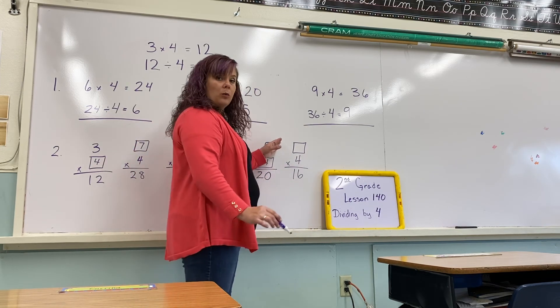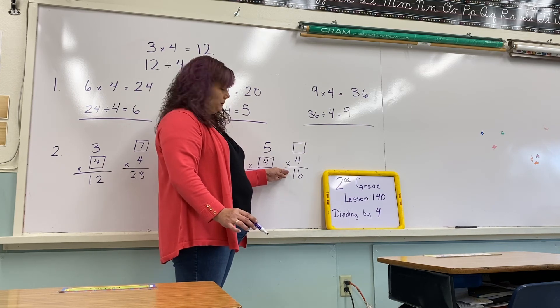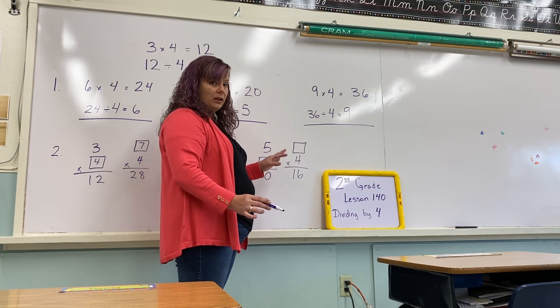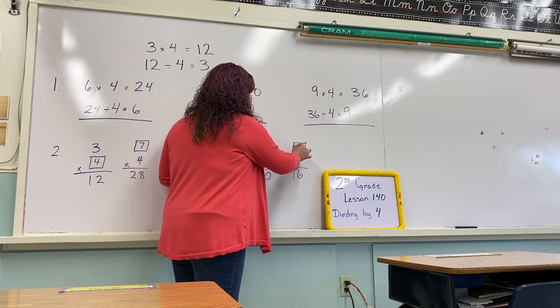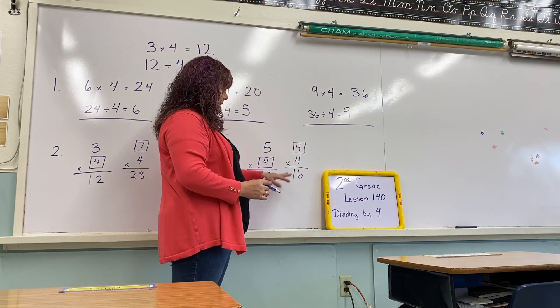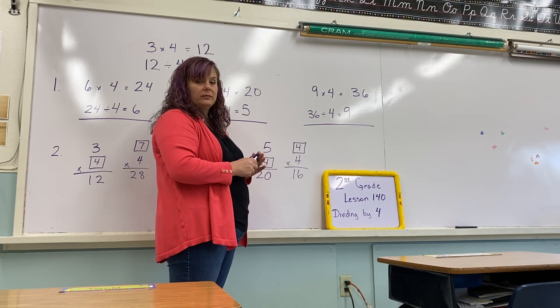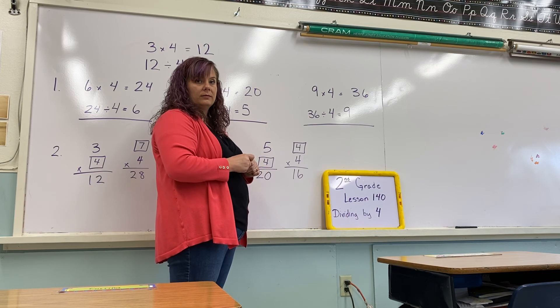Last one. What number times 4 equals 16? Yes, very good. That one is 4. 4 times 4 equals 16. Or 16 divided by 4 equals 4.